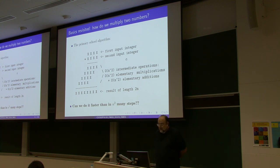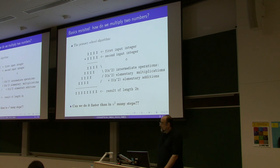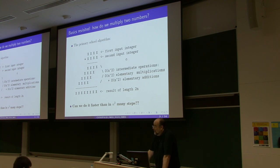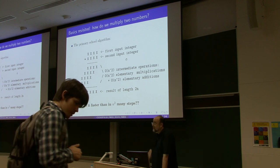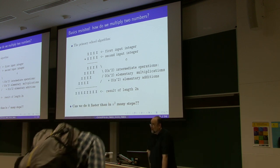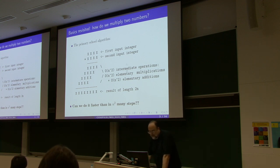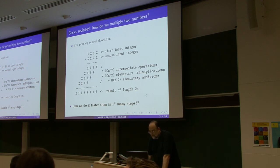Let me quickly remind you of the problem we considered: how to multiply large integers in a fast way. This visual representation should persuade you that there are n² many elementary operations. If each digit of x is multiplied by the other digits in constant time, this will be n² many operations.